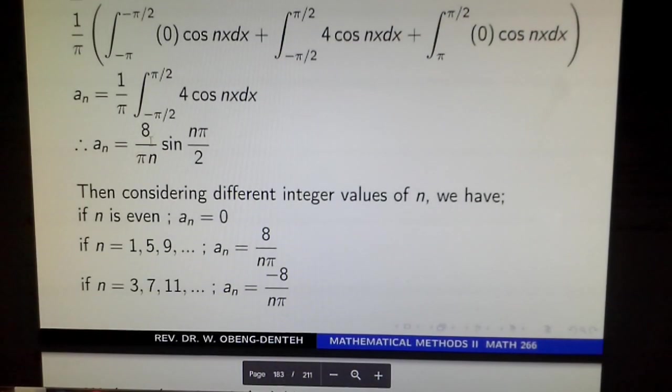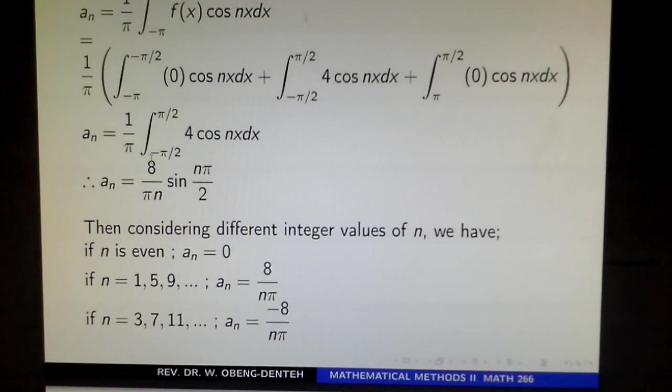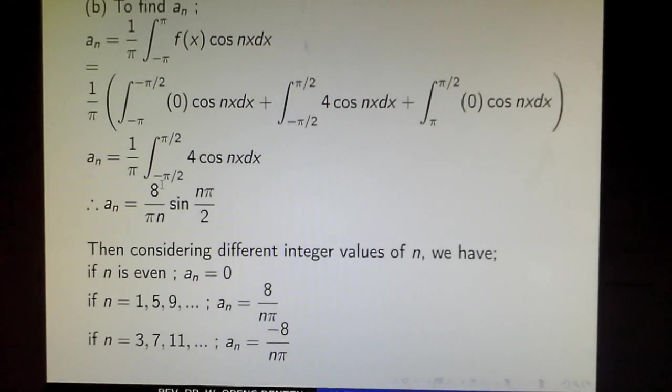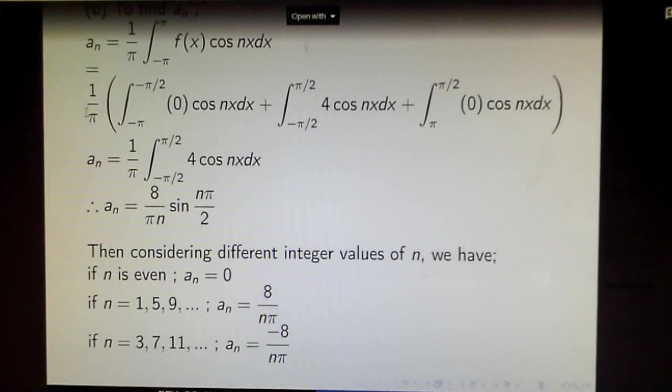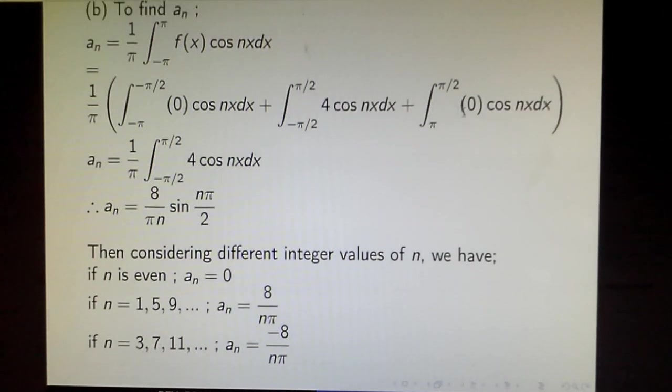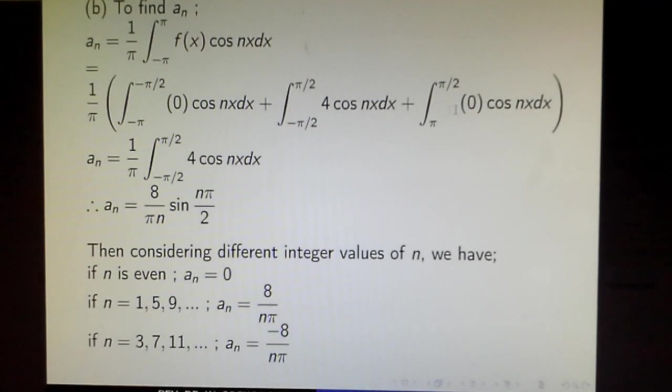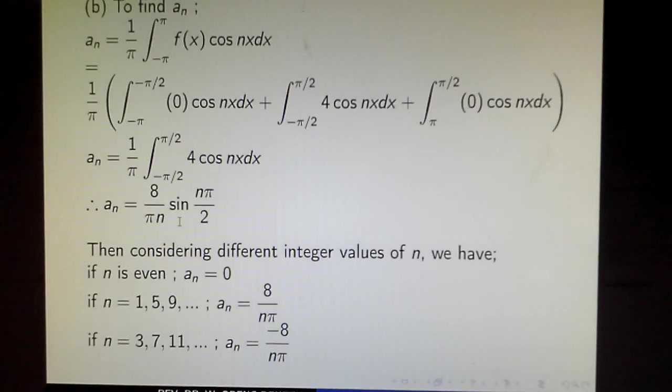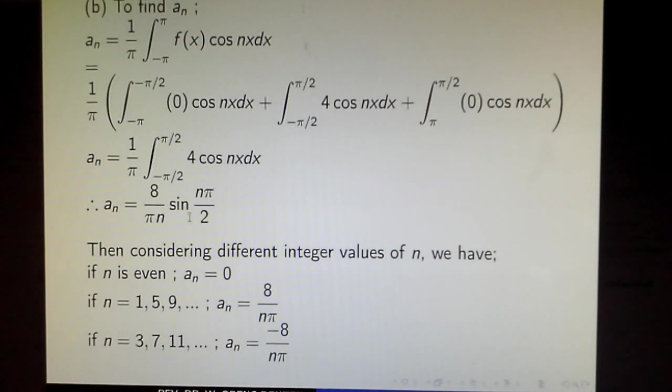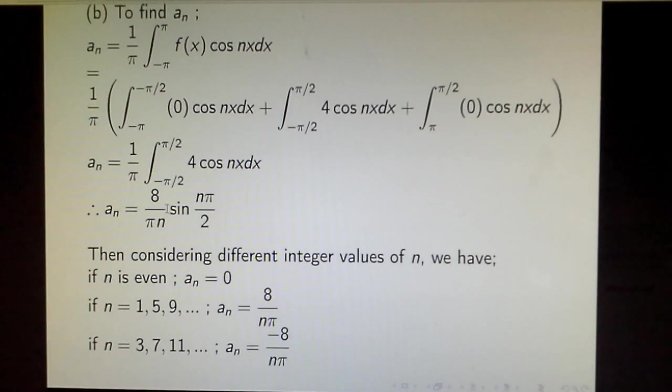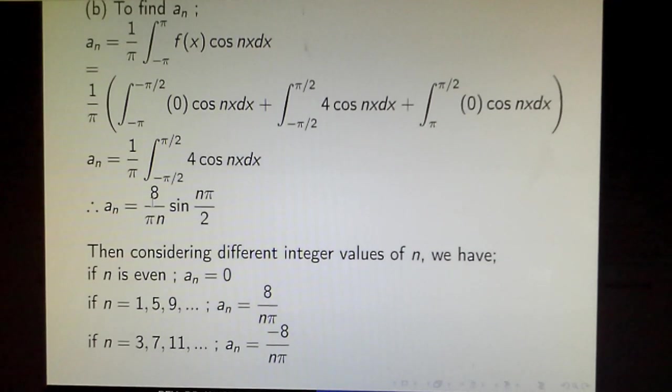Next, we find a_n using the formula a_n = (1/π)∫f(x)cos(nx)dx. Going back to the figure, we write down the expression with the upper and lower limits, then reduce it to this form. We integrate—integrating cos gives sine—and that takes us to this expression. After division, we get...